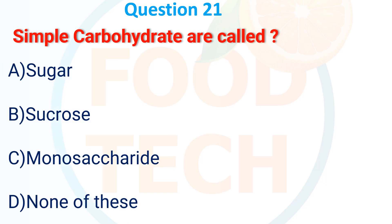Question 21: Simple carbohydrates are called — A. Sugar, B. Sucrose, C. Monosaccharide, D. None of these. The answer is A. Sugar.